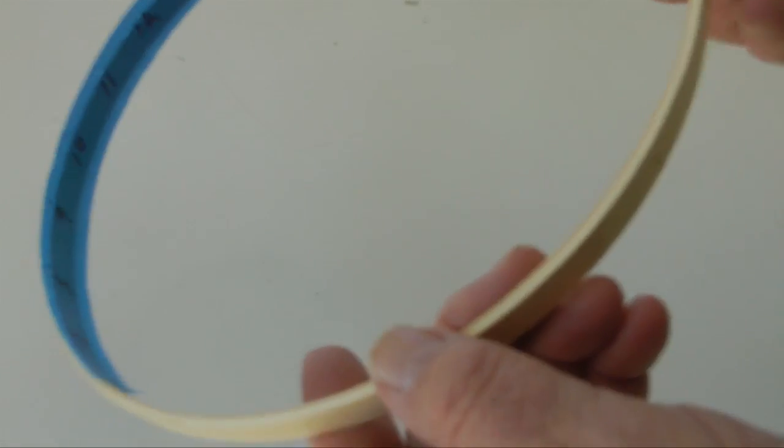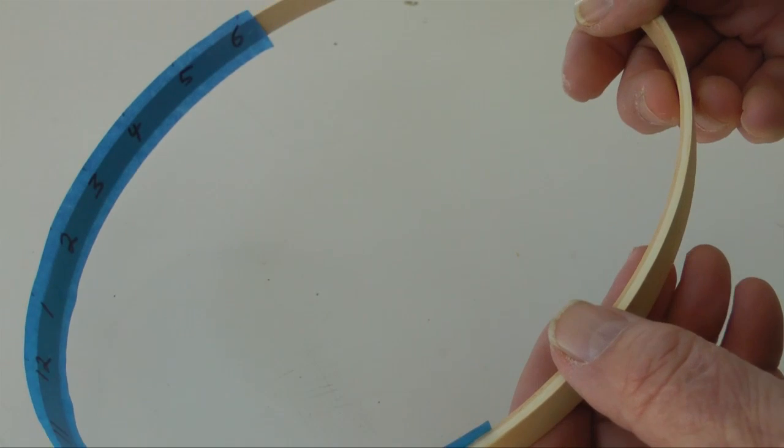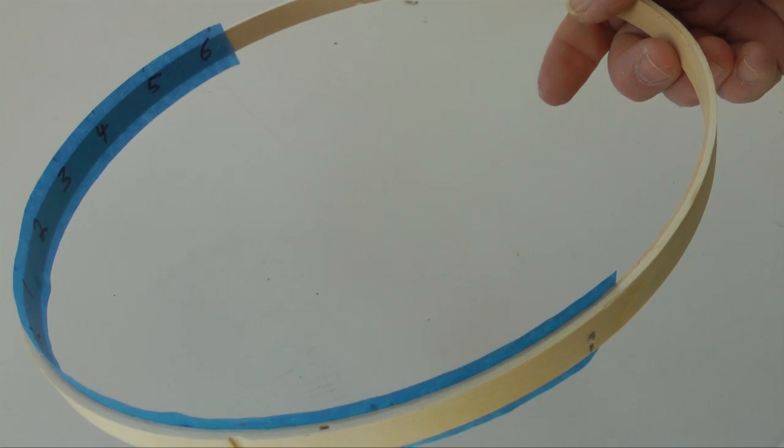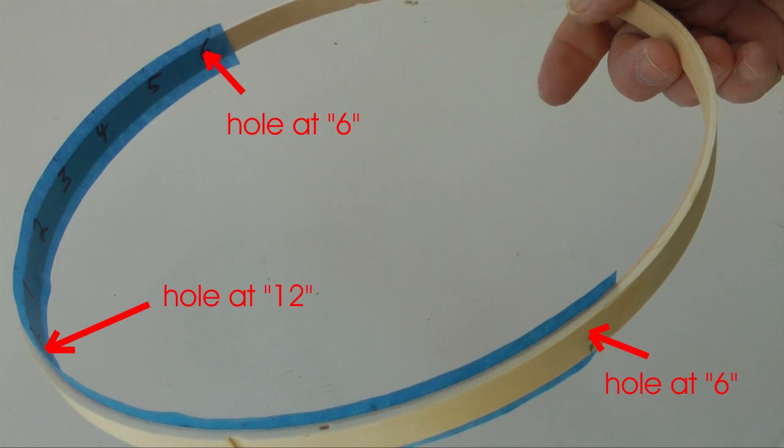Attach the tape to the inside hoop, like this. I have removed the small hoop to make this task easier. Note that the opposite holes align with each number 6. The center hole aligns with 12.